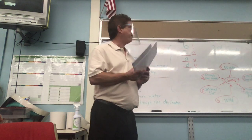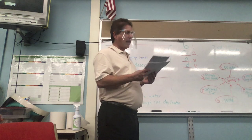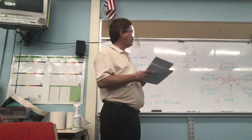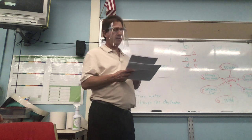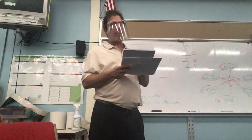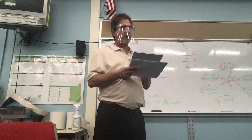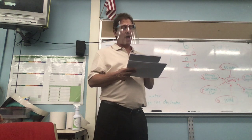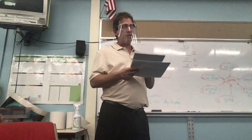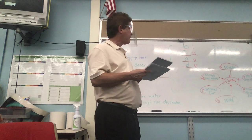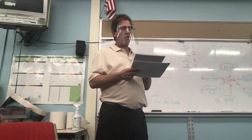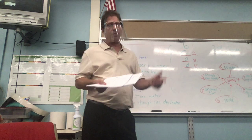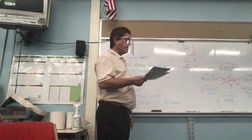Basically, everything that surrounds and affects a living thing is your environment. A strong woody root above the ground that supports a tree trunk in wet ground is a prop root. A long flattened root that grows on the surface of the ground and widens at the base is a buttress root. To make living things of the same kind reproduce.